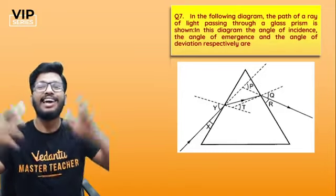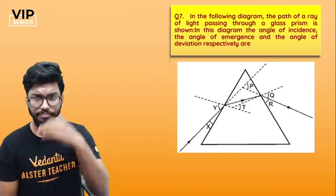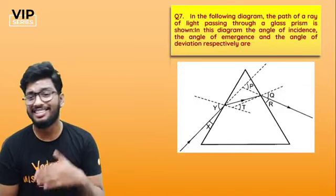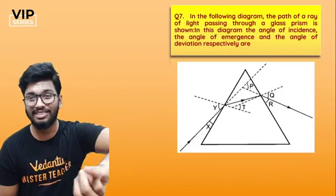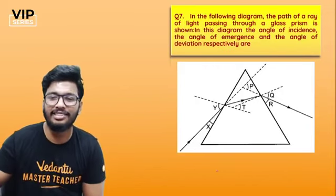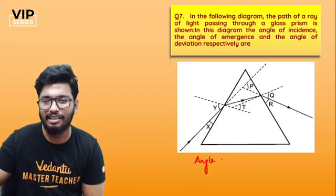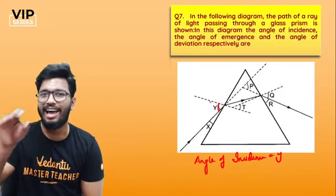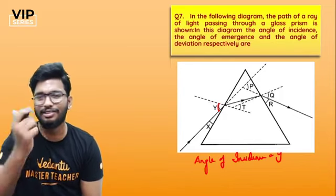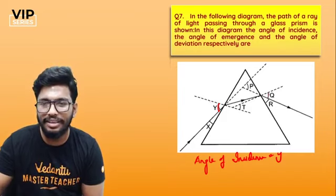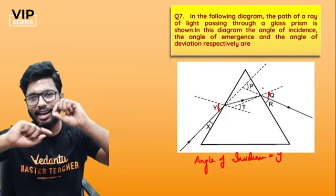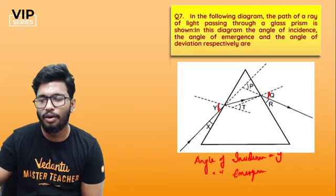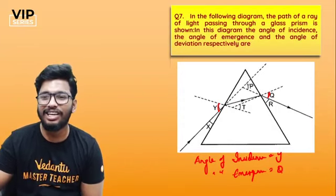Seventh question: in the diagram showing the path of a ray of light through a glass prism, the angle of incidence, angle of emergence, and angle of deviation respectively are which? The angle of incidence is Y — that is the angle between the normal and the incident ray. The emergent ray gives us angle Q — that is the angle of emergence. The angle of deviation is P.